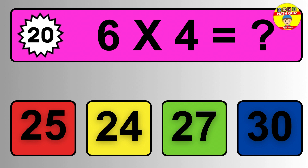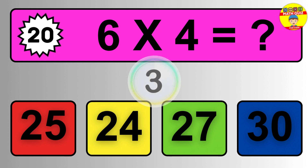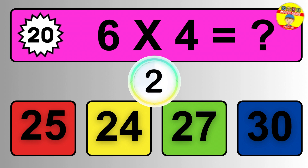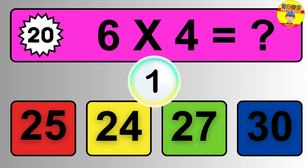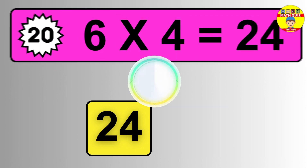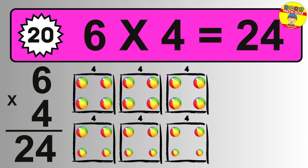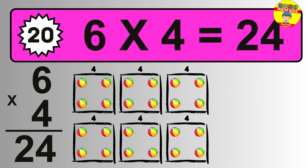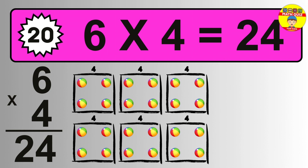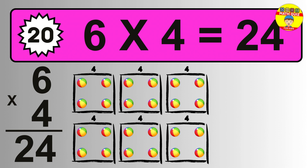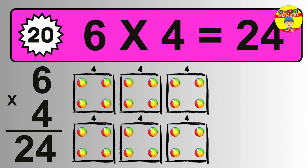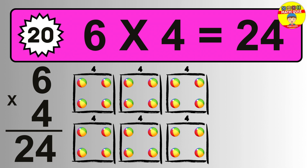Question twenty: six times four equals what? The answer is six times four is twenty-four. To calculate, we have six groups with four balls each. So how many balls do we have? Twenty-four balls.